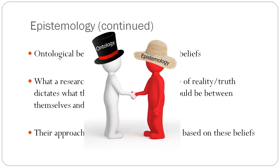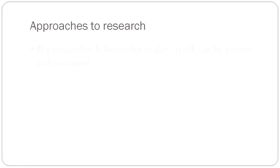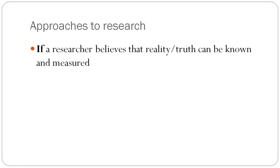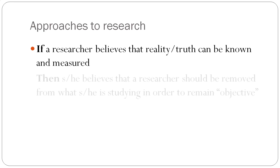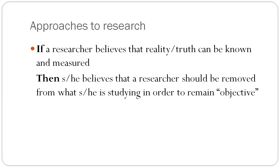When you think of ontology and epistemology, I want you to think of them as going hand in hand. Hopefully this picture will help for those of you who need visual images like I do. So in terms of approaches to research: if a researcher believes that reality or truth can be known and measured — they think that reality is objective — then this person believes that a researcher should be removed from what they are studying in order to remain objective.